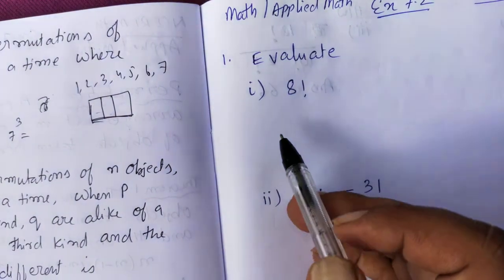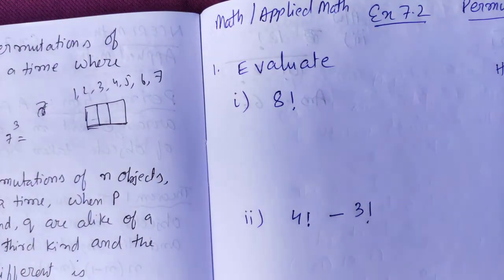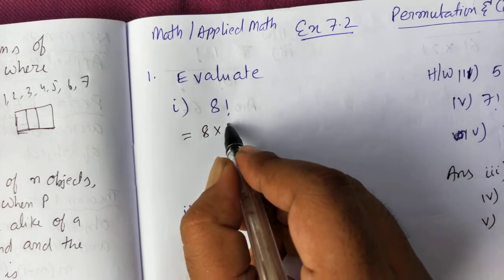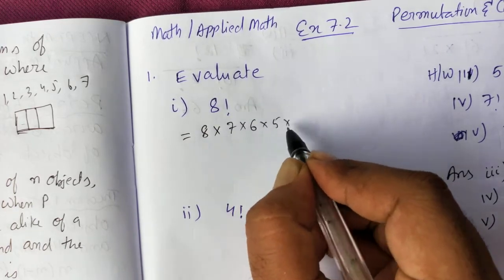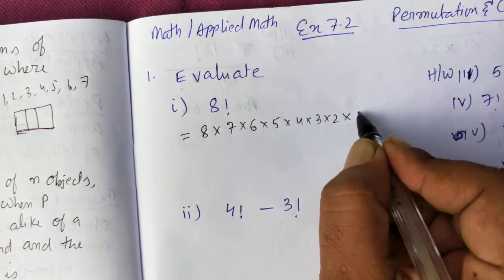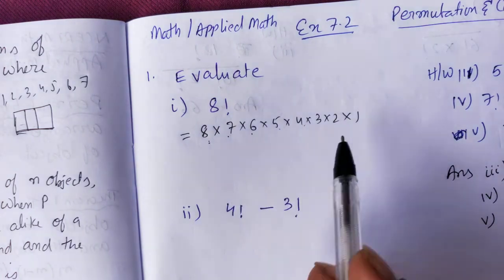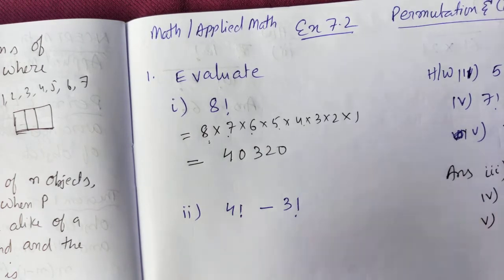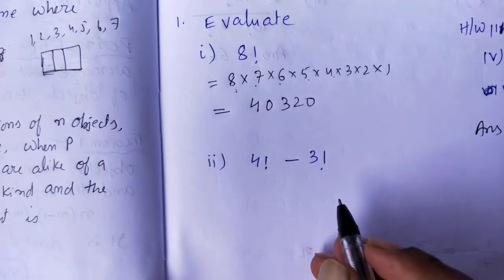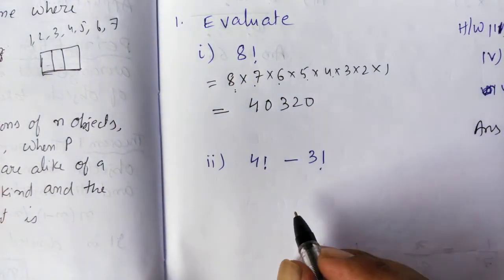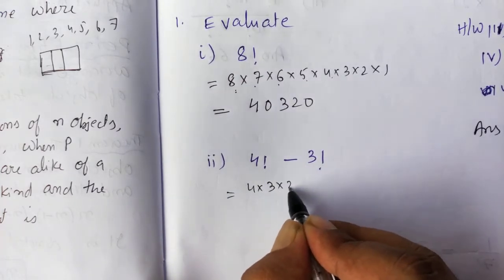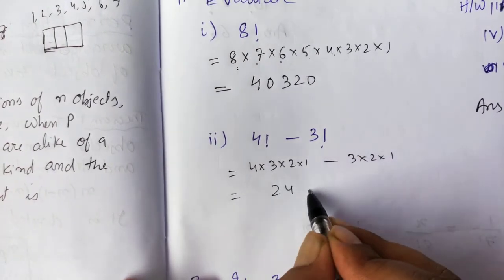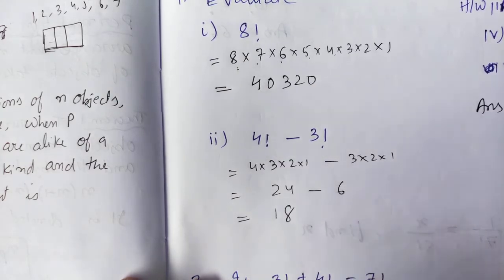Exercise Q1: Find 8 factorial. 8! = 8 × 7 × 6 × 5 × 4 × 3 × 2 × 1 = 40320. For 4! − 3!: 4! = 4 × 3 × 2 × 1 = 24, and 3! = 3 × 2 × 1 = 6, so 24 − 6 = 18.